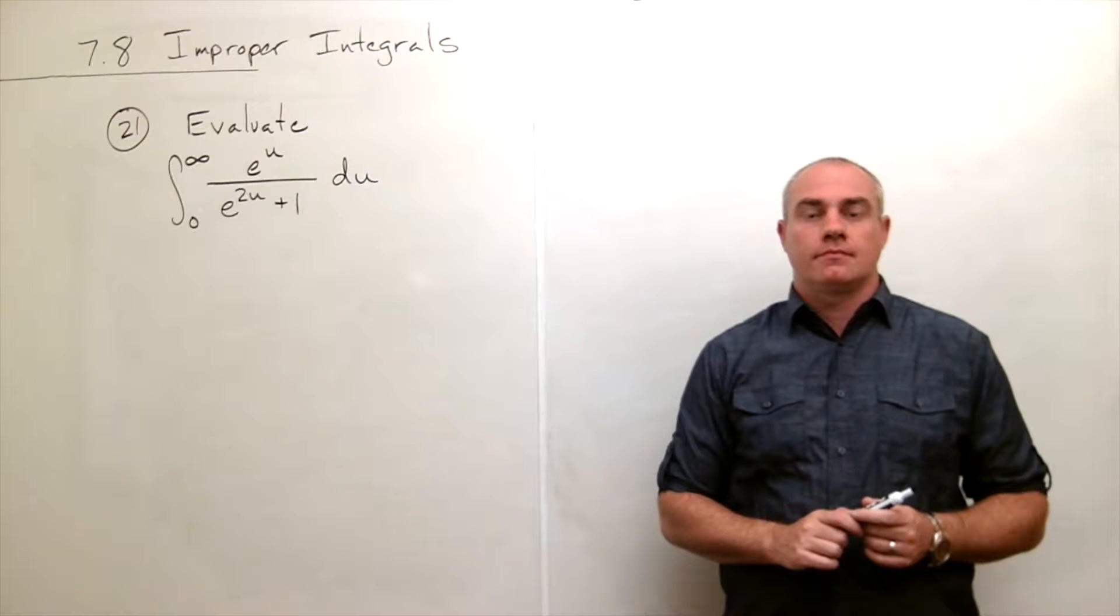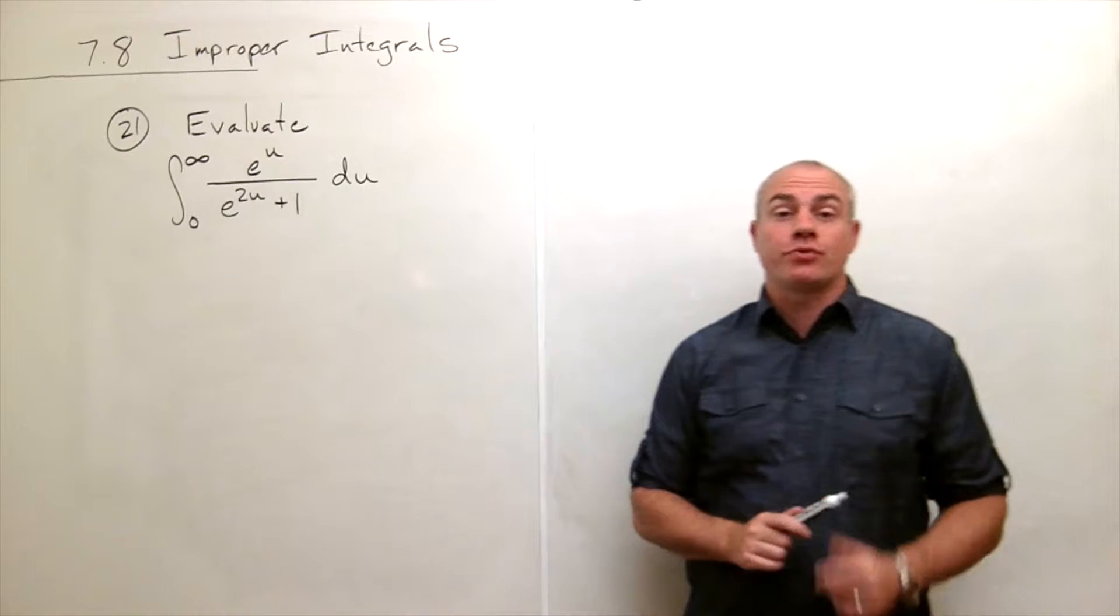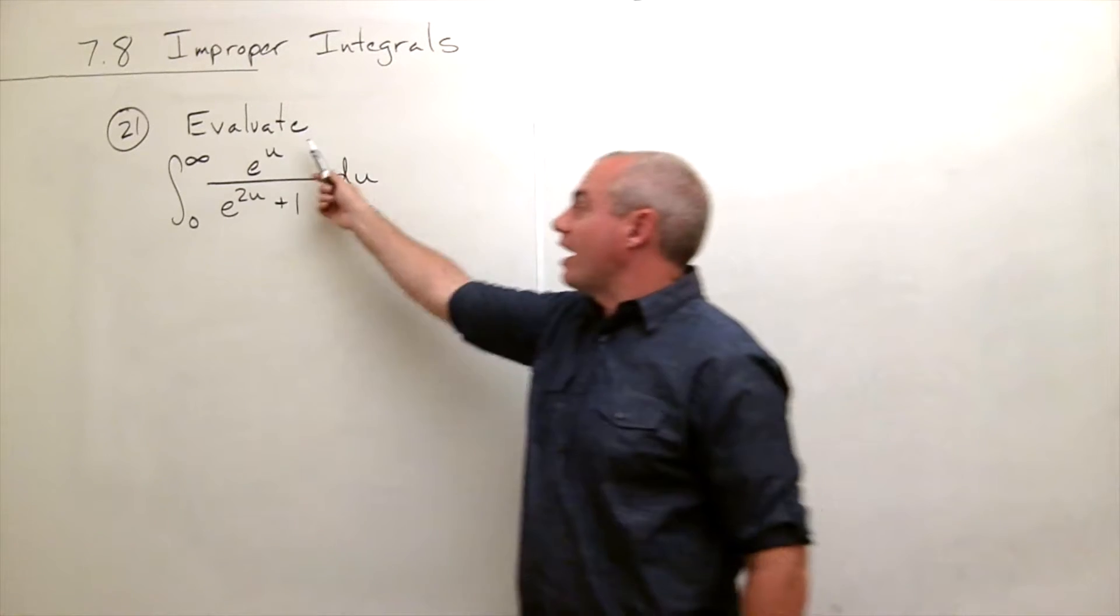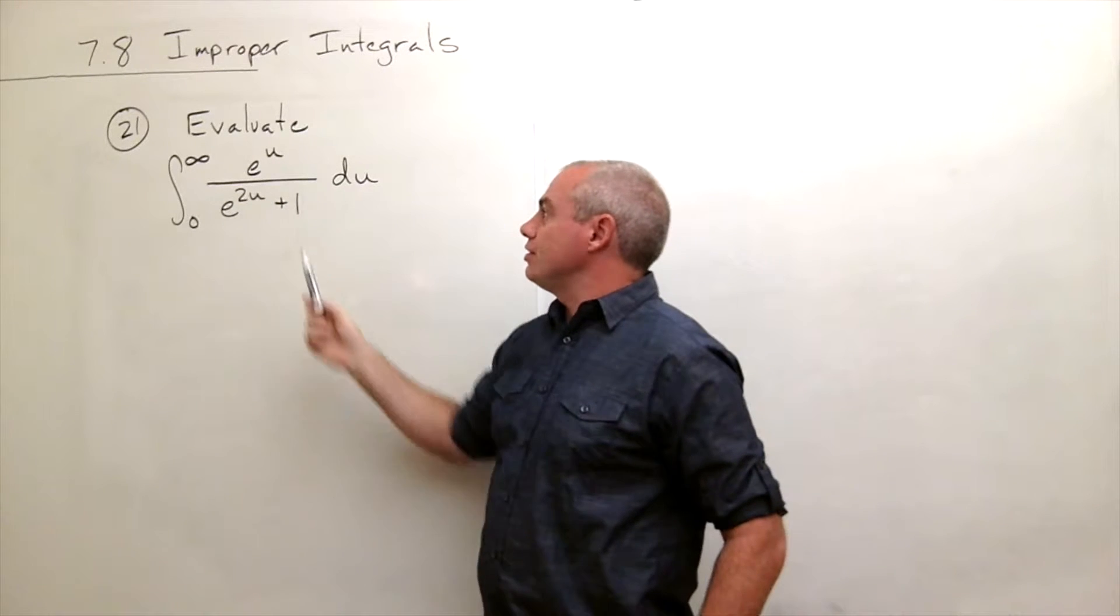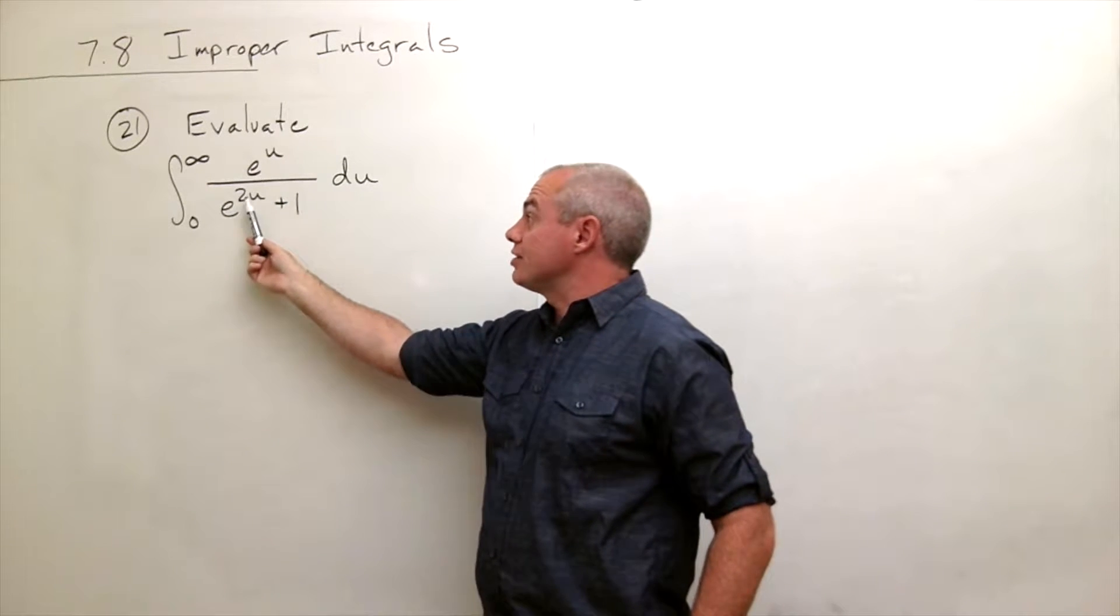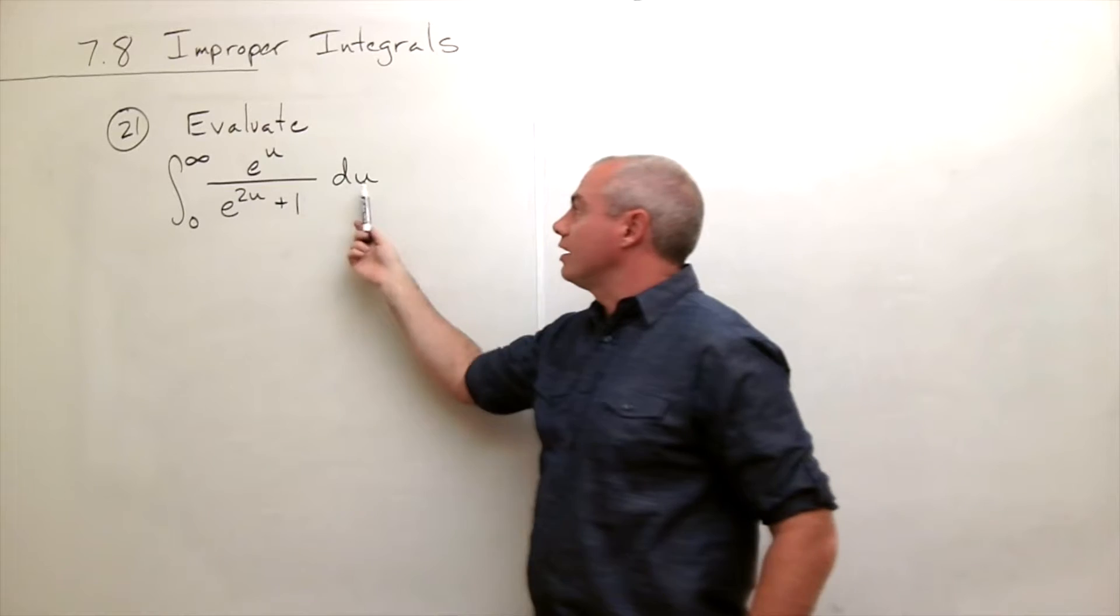I'm the calculus professor and today I'll be talking to you about improper integrals. In problem number 21 we'd like to evaluate the integral from zero to infinity of e to the u divided by e to the 2u plus 1 du.